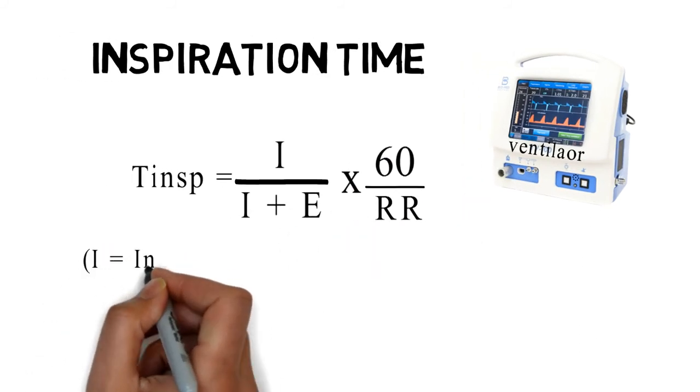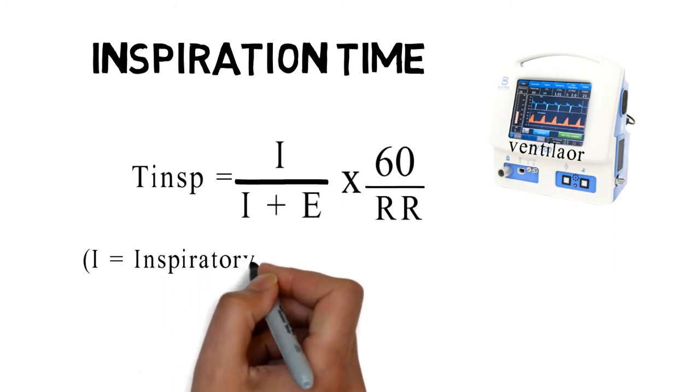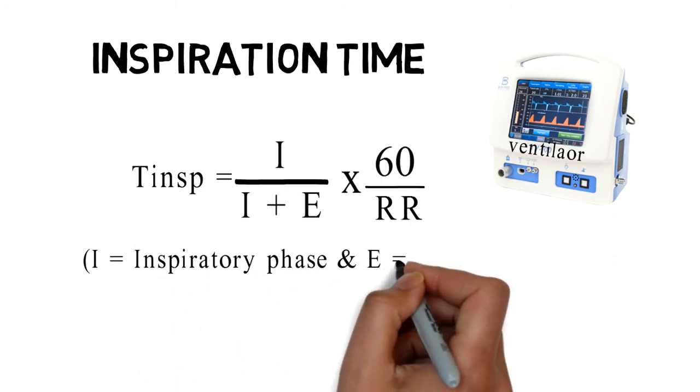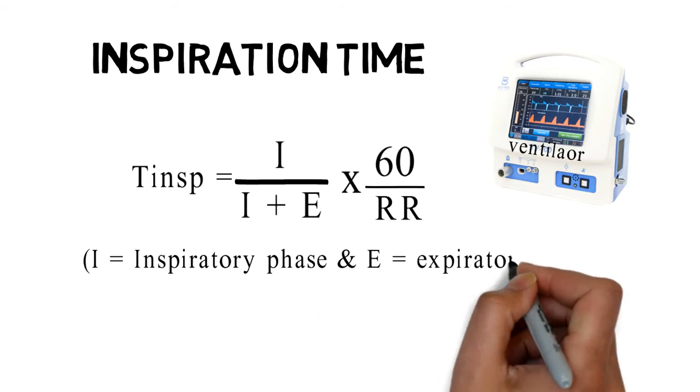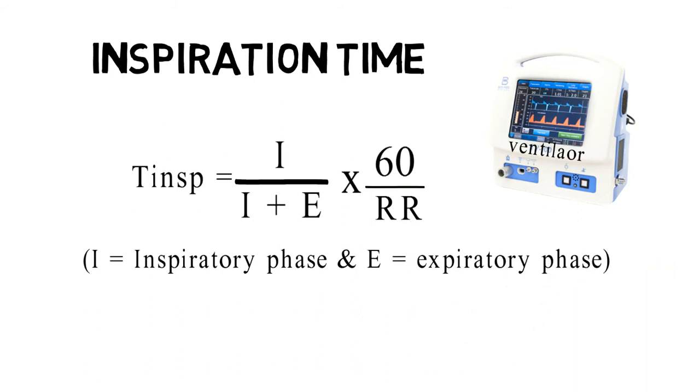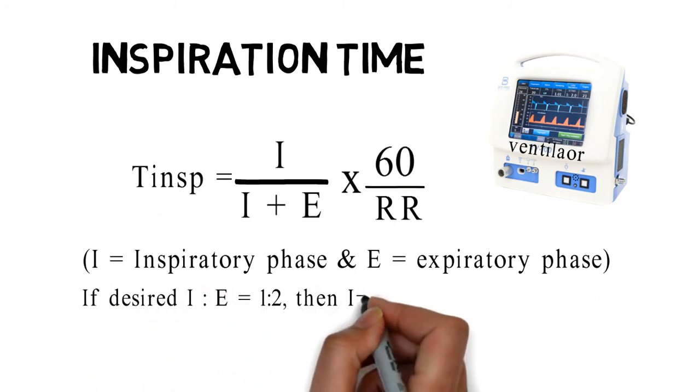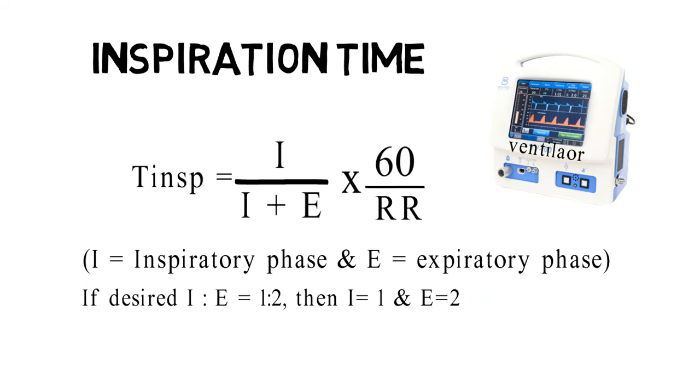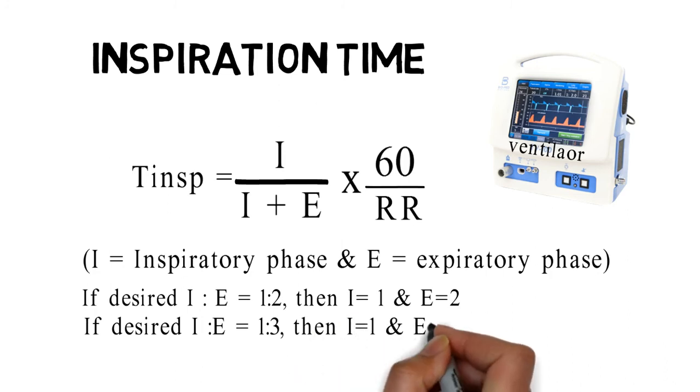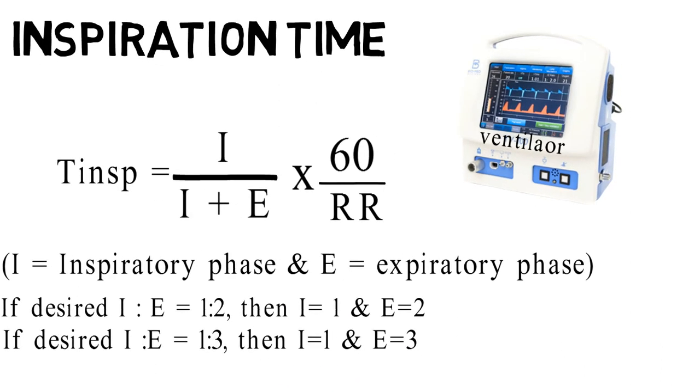Where I is the inspiratory phase and E is the expiratory phase. If the desired IE ratio is 1 to 2, then we will put I equals 1 and E equals 2 in the formula. Similarly, if desired IE ratio is 1 to 3, then we will put I equals 1 and E equals 3 in the formula.